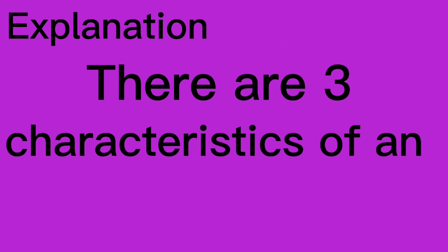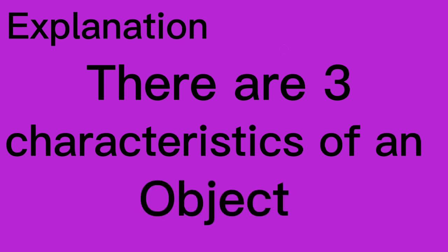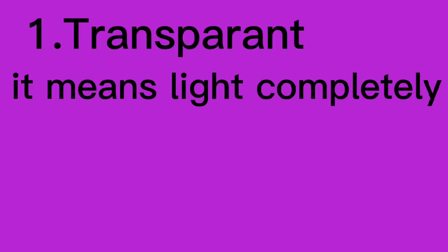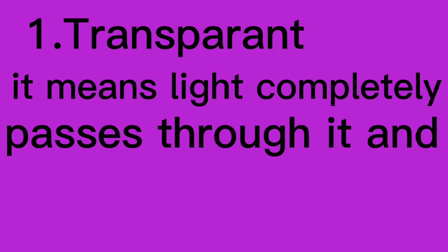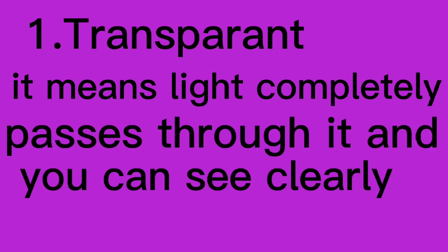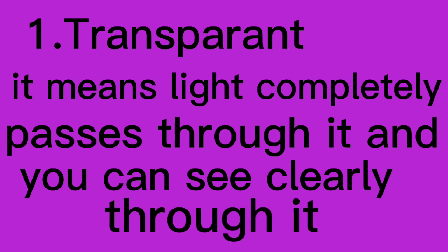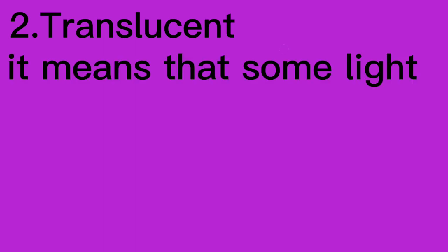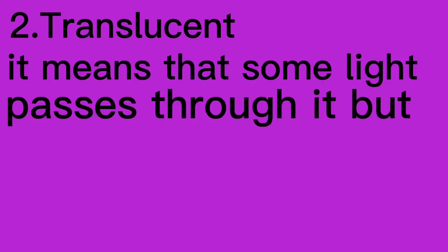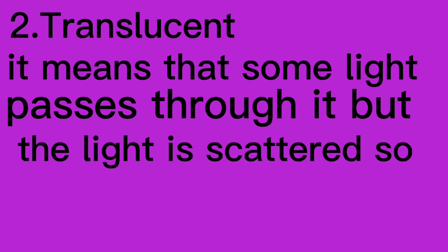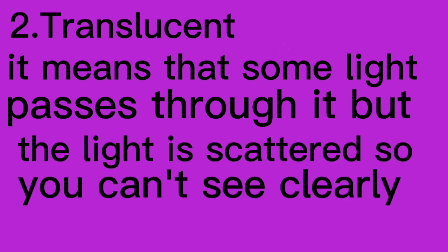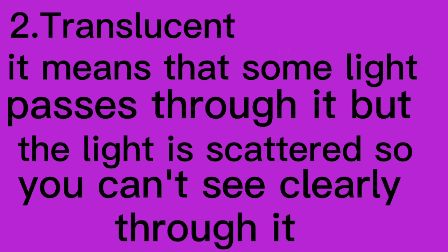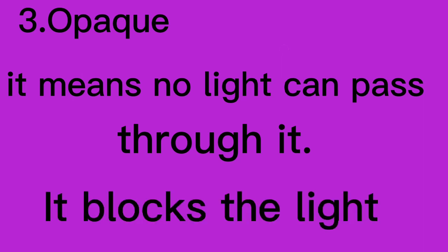There are three characteristics of an object. One, transparent — it means light completely passes through it and you can see clearly through it. Two, translucent — it means that some light passes through it but the light is scattered, so you can't see clearly through it. Three, opaque — it means no light can pass through it. It blocks the light.